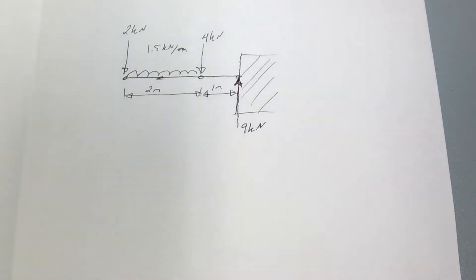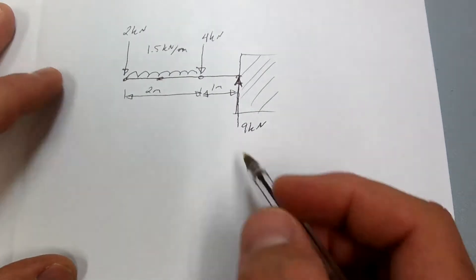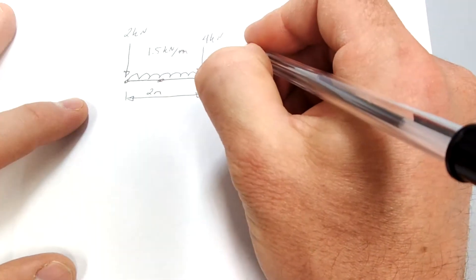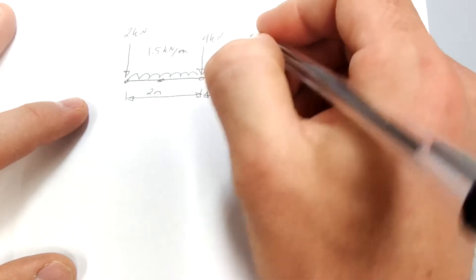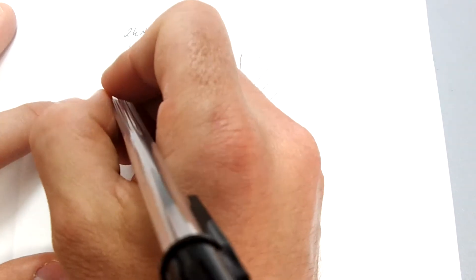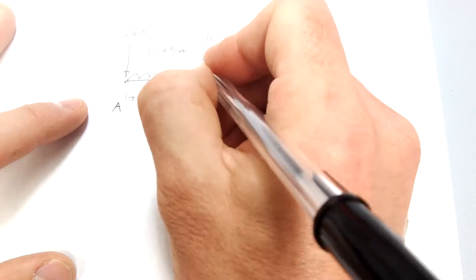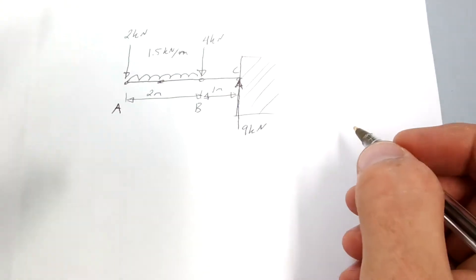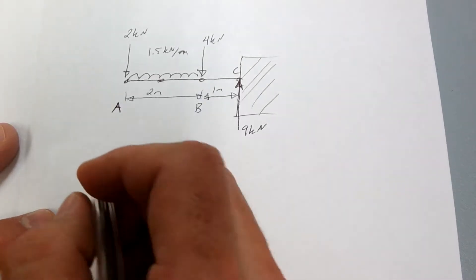Let's take a look at the shear force diagram for this cantilever beam. Let's go ahead and label some points. Let's label this point here A, this point here B, and this point here C.